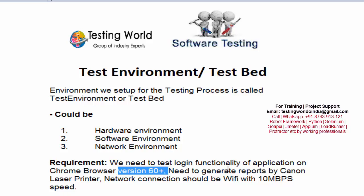Another requirement: need to generate reports by using a Canon printer. We have a reporting module and we want to generate reports and then print them. The requirement is that the printer should be a laser printer from Canon. So before doing that, we will have to set up a Canon laser printer.